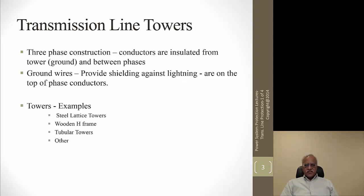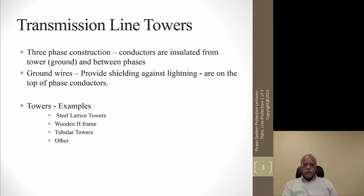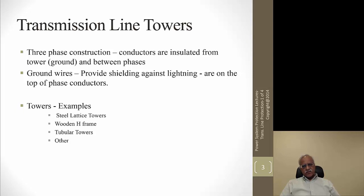Transmission towers are steel or wooden structures which support and hang the three-phase wires. Examples include steel lattice towers, wooden H-frame, wooden poles, tubular structures, and composite material poles. Ground wires are placed on top of transmission structures in most cases to prevent lightning strikes from hitting the phase conductors. In some areas ground wires are omitted because the terrain has high resistance and the probability of lightning is low.